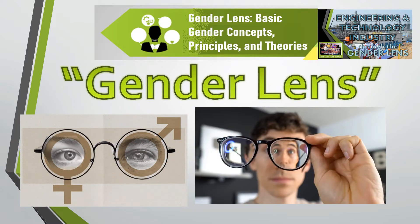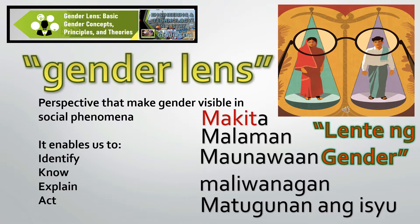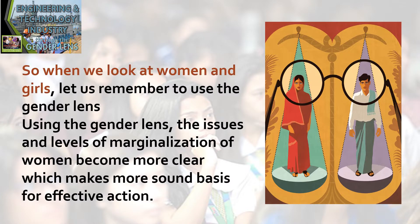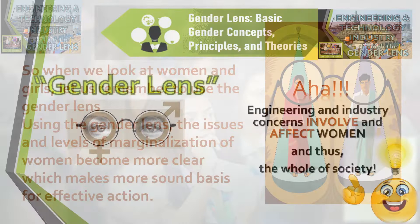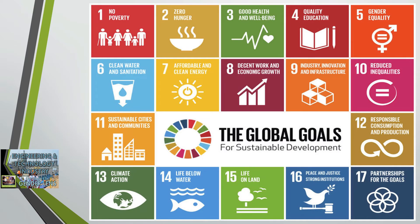The gender lens is the tool you should acquire upon completing this course. It enables gender sensitivity and gender responsiveness — the perspective that makes gender visible in social phenomena around you. It enables us to identify, explain, and act. Through the gender lens, we use our critical minds to examine every aspect and stage of an event or process, uncovering the gender dimension by asking whether there is inequality in participation and what the effect is on the lives of men and women. Engineering and industry concerns involve and affect women and thus the whole of society. Gender discrimination and gender-based violence in both private and public dimensions affect stakeholders of the industries under examination, and it is only through deliberate consideration of these gender issues that they may be addressed.